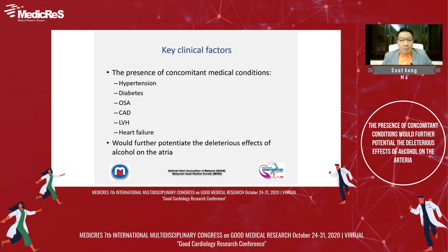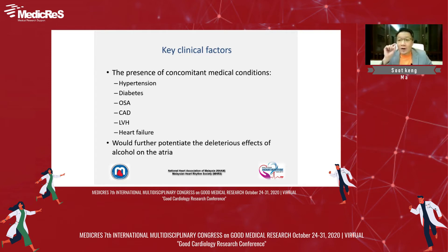Let me switch gears and talk about something very important. The topic given to me is purely on social drinking and the risk of developing AF, but we cannot isolate ourselves by just talking about alcohol consumption. The key is to look at the patient and look for all these key clinical factors. The presence of concomitant medical conditions substantially increases the risk of developing AFib in the face of social drinking — hypertension, diabetes, obstructive sleep apnea, coronary artery disease, left ventricular hypertrophy, and heart failure. If your patient already has these established cardiovascular diseases, the advice I would give is total abstinence from alcohol.